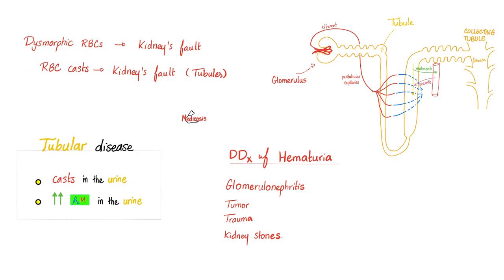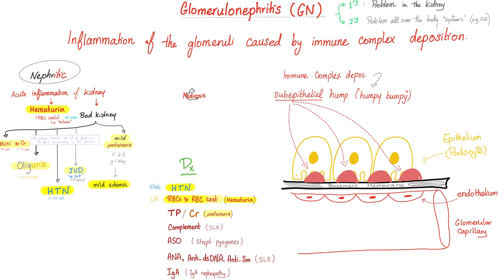In acute post-streptococcal glomerulonephritis, we have inflammation of the glomeruli caused by immune complex deposition, usually sub-epithelial — meaning beneath the epithelium, underneath the podocytes. This creates a characteristic lumpy-bumpy appearance on electron microscopy, sometimes called humpy-bumpy — not to be confused with Humpty Dumpty.